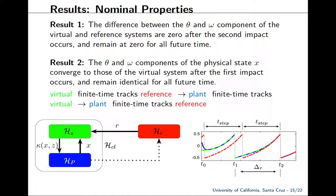The results we were able to achieve show that the difference between the limb angles and velocities of the virtual and reference systems becomes zero after the second impact and remains zero for all future time. Also, the limb angles and velocities of the physical biped converge to those of the virtual system after the first impact and remain there for all future time. This means the virtual system finite-time tracks the reference, the physical biped finite-time tracks the virtual system, and as a result, the physical biped finite-time tracks the reference.